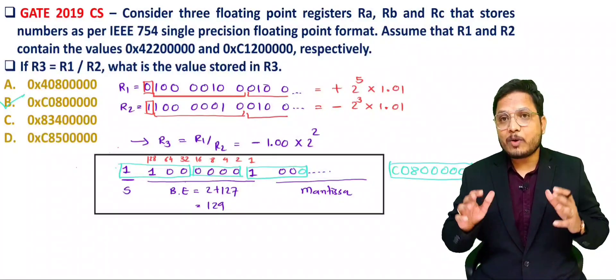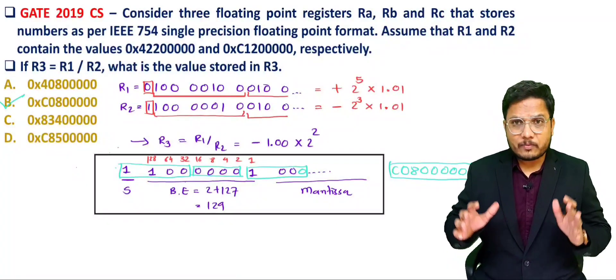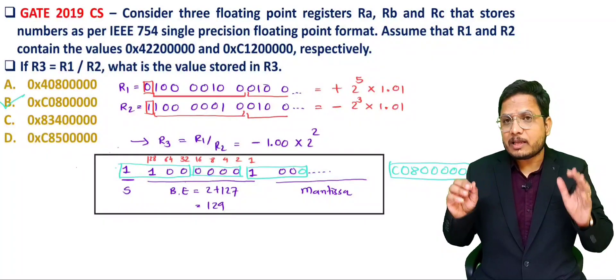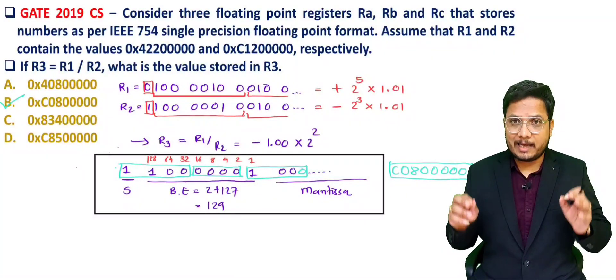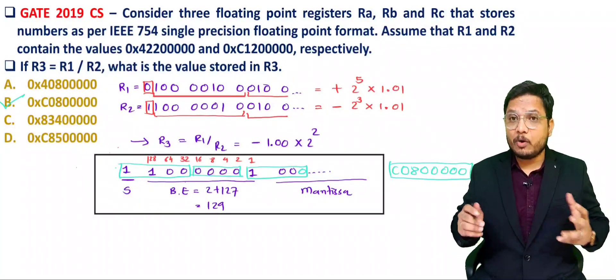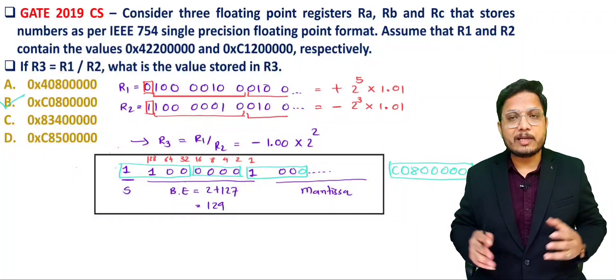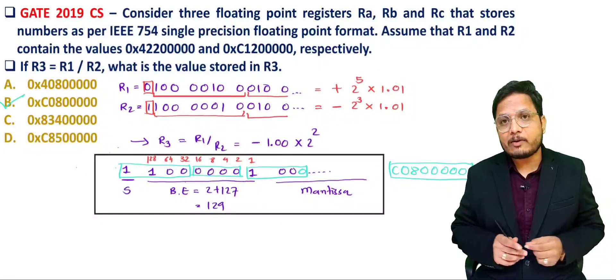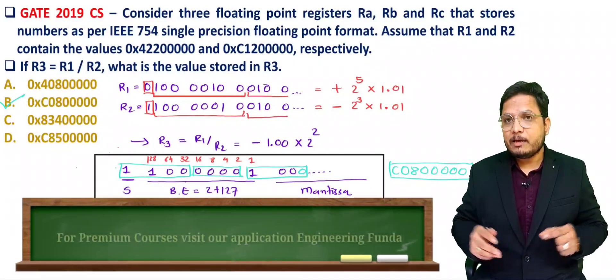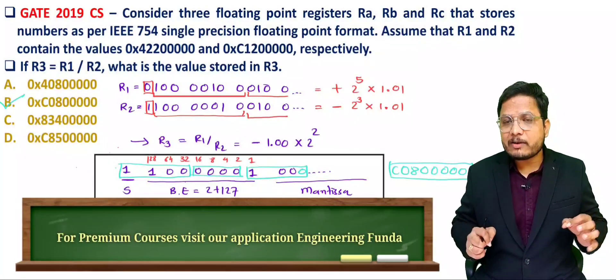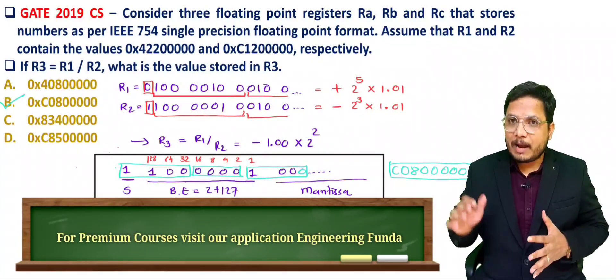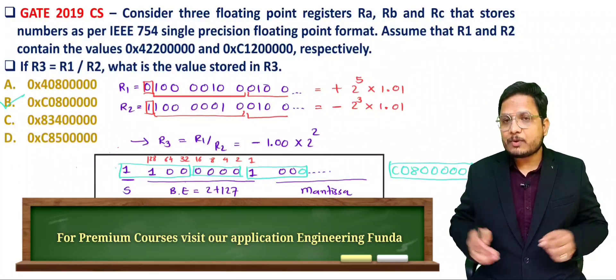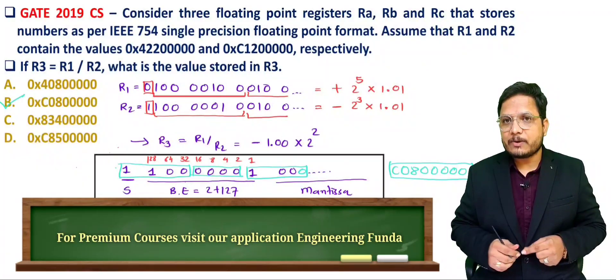That is how you identify the number in hexadecimal form from IEEE 754 representation. I hope it is clear to you. If you have anything to share, please note it in the comments box — I am happy to help. Thank you so much for watching this video.